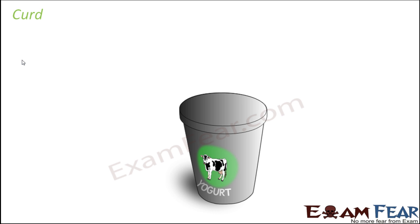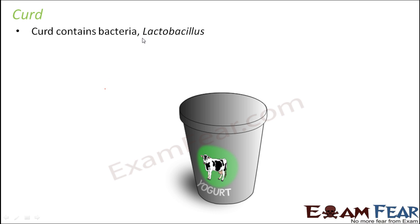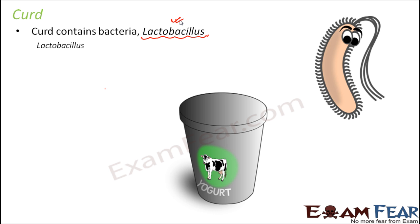Let us see which specific microbe plays an important role in curdling of milk. Curd contains a bacteria called Lactobacillus — this is the bacteria responsible for curdling of milk. We will understand the entire process in the next slide, but first let us understand which bacteria is present in curd: it is Lactobacillus.